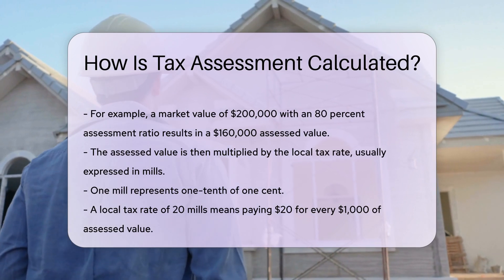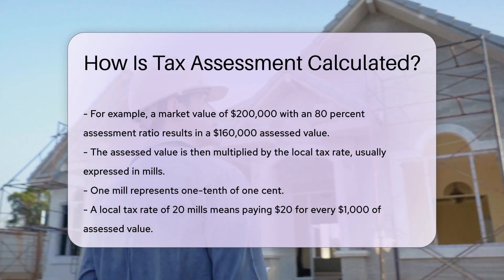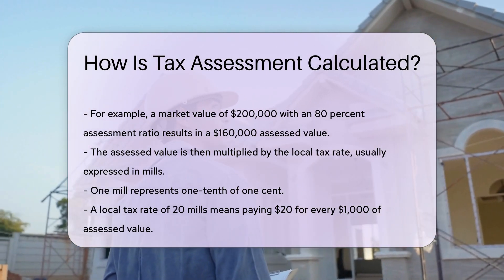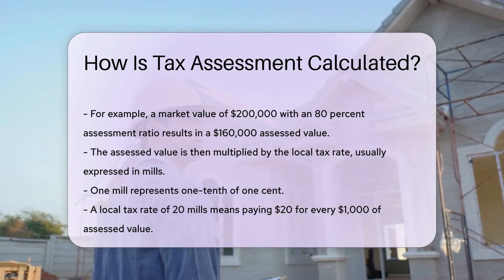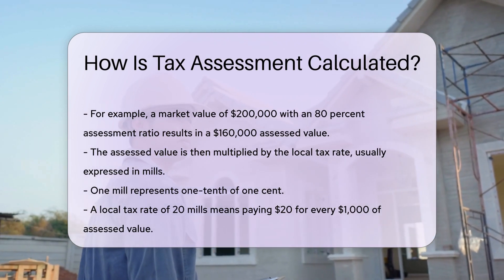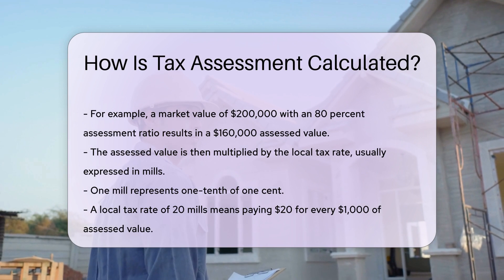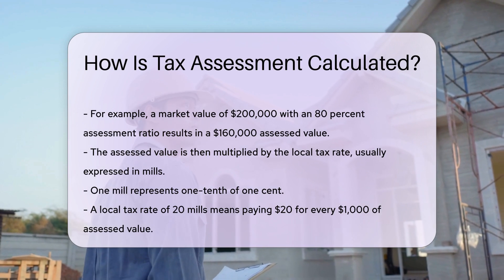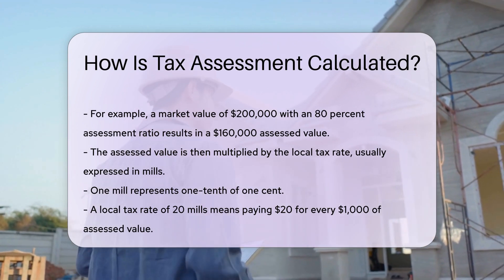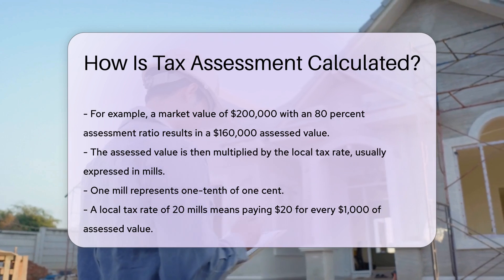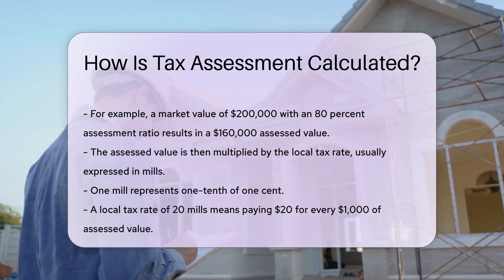Next, the assessed value is multiplied by the local tax rate, which is usually expressed in mills. One mill represents one-tenth of one cent. If your local tax rate is 20 mills, it means you pay $1.20 for every $1,000 of assessed value.